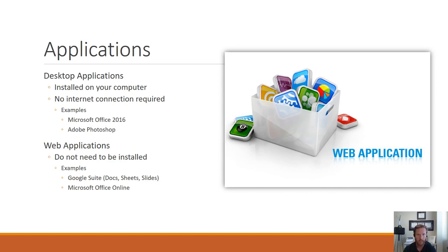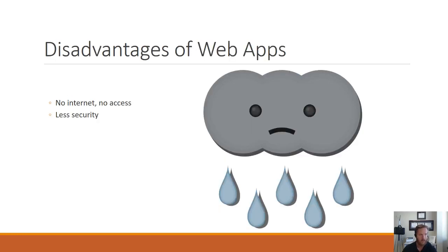Let's go over some of the disadvantages of using a web app first, and then we'll go into a couple of the advantages. The first disadvantage would be: no internet, no access. If you're trying to use Microsoft Office Online and you do not have internet access, you will not be able to use that program. But if you had Microsoft Office 2016 installed on your computer, you would still be able to use it even without internet access.